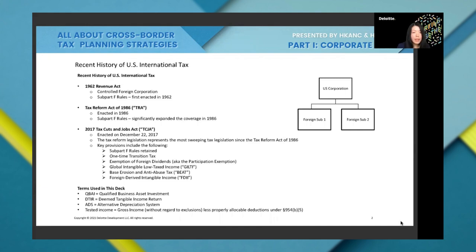The next major tax reform is the 2017 Tax Cuts and Jobs Act, TCJA. TCJA brought in many key international provisions. The first is the one-time transition tax. Under the 1986 Act, earnings by foreign sub two were not currently taxed in the U.S. until actual repatriation. TCJA changed this — all untaxed earnings by foreign sub two from 1986 to 2017 would be taxed by the U.S. as a one-time tax.